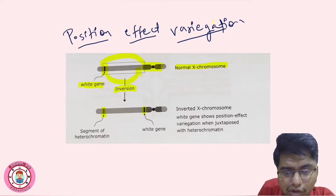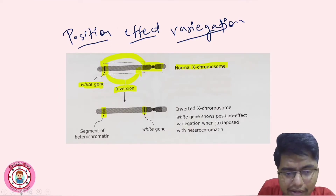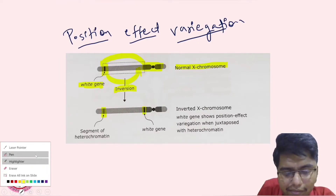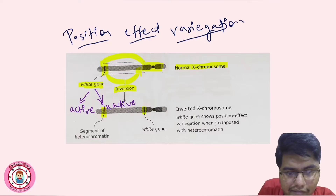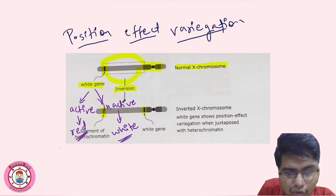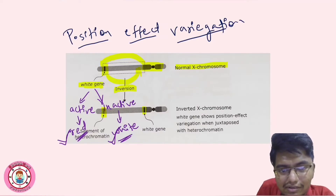That different phenotype is known as variegation. Variegation means patches of white and patches of red that we can see in the eye. So basically, what does this white gene do? It is responsible for eye pigment production in Drosophila. When the white gene is active, it produces red pigment; when inactive, it produces white color. But when there is a change in position due to inversion, we see both white patches and red patches — that is known as variegation.